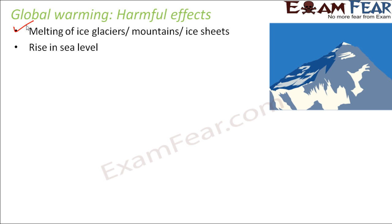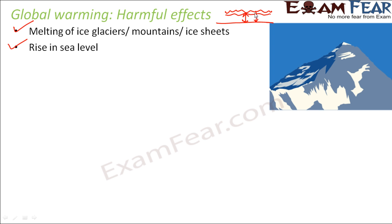Another effect is the rise in sea level. When all the glaciers are melting, a lot of water pours into the ocean, leading to an increase in sea level. When the sea level increases, the coastal areas get submerged under water.